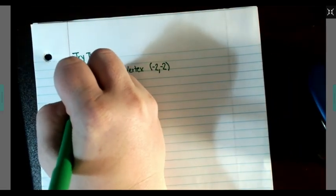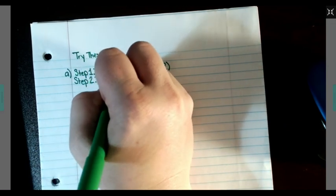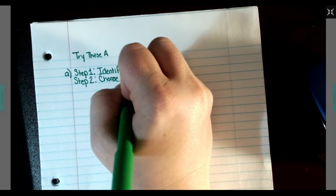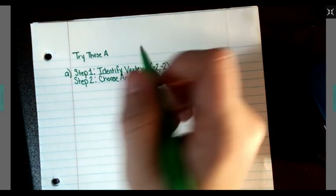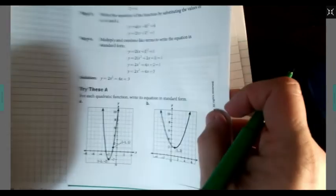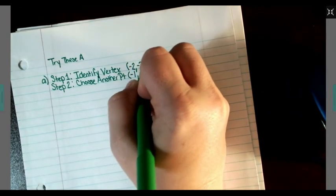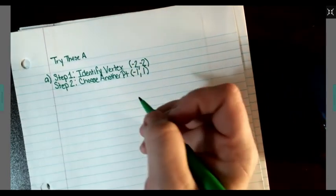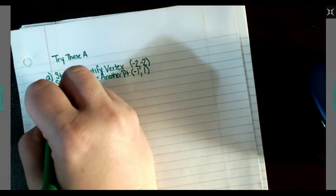Step 2: Choose another point. Well, that's easy. They gave me another one labeled at negative 1, 1.